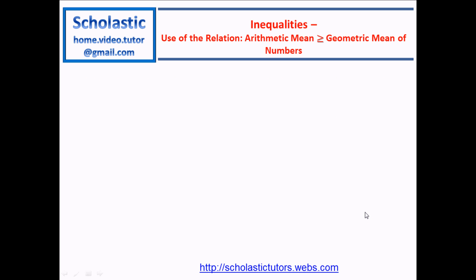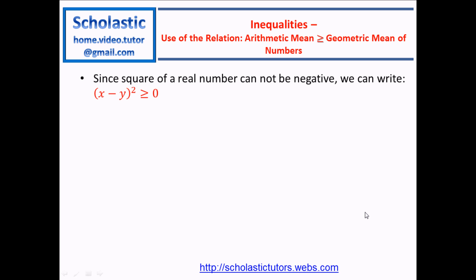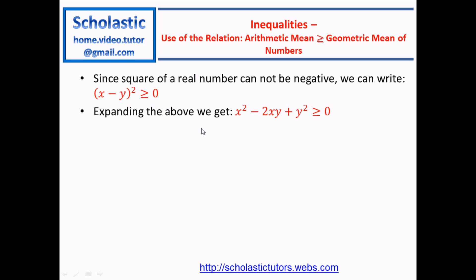Let's see how we are going to tackle this problem. First we will take this expression. Since the square of a real number cannot be negative, we can write X minus Y squared is greater than or equal to 0. Equal applies when X equals Y; otherwise it is always greater than 0. So when we expand this, we get X squared minus 2XY plus Y squared is always greater than or equal to 0.